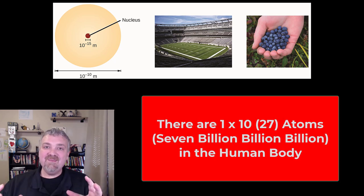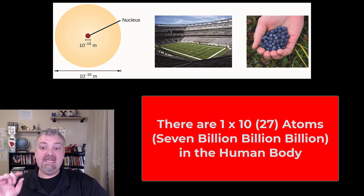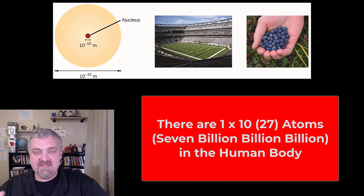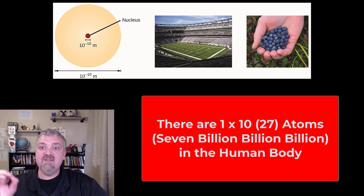And then, of course, let's talk about humans. This is a human anatomy and physiology course. If you take a typical 154 pound human, there would be 10 to the 27th atoms. That is 7 billion, billion, billion atoms in your human body.